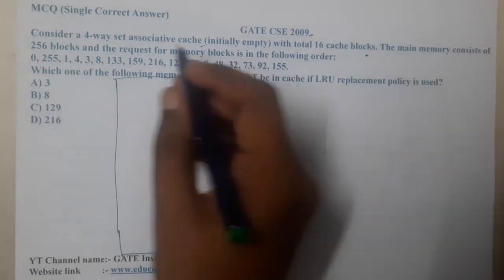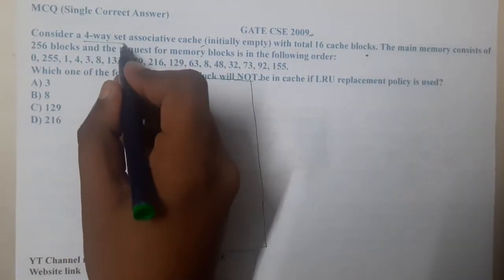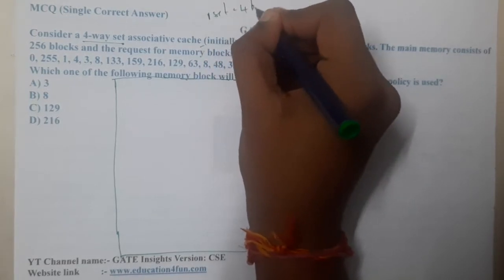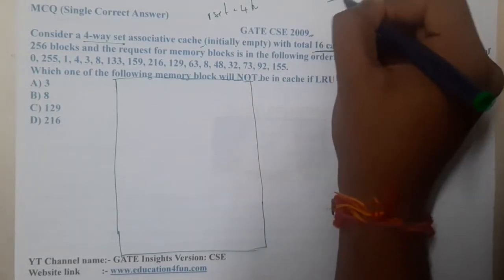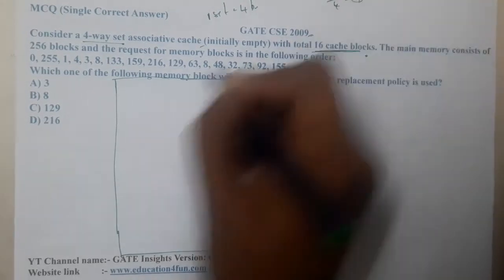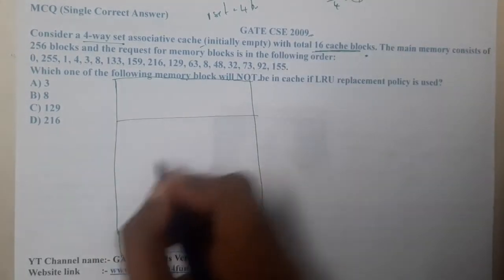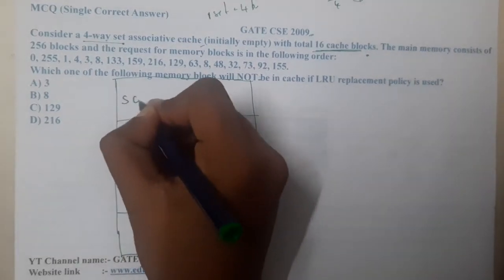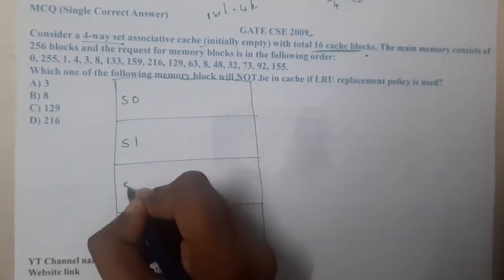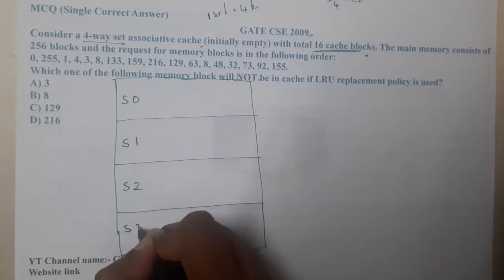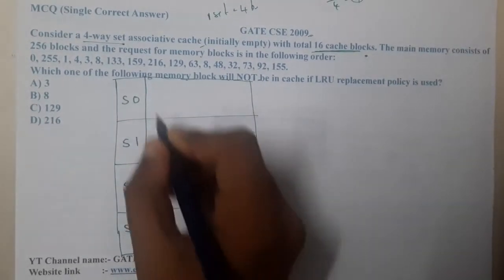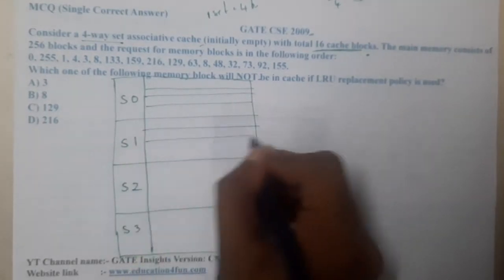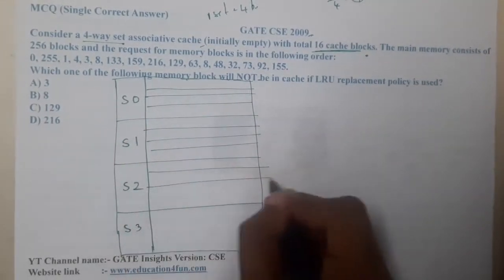What they told is there are 4-way set associative, means in one set we have 4 blocks. They told there are total 16 cache blocks, so 16 divided by 4 is 4, so there are total 4 sets to be clear. Set 0, set 1, set 2, set 3.